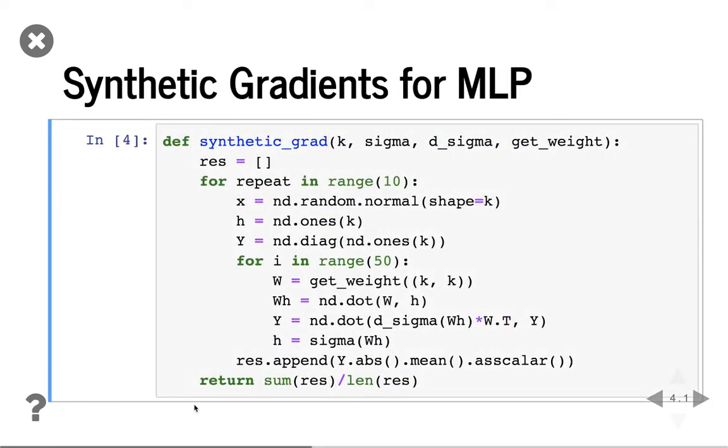Then we define a function to compute the synthetic gradients of MLP. So the input is k. Again, this is the shape. And sigma is activation function. D_sigma is sigma prime. This is a gradient function of the activation function. Then get_weight, which means how to initialize, how to get the initialized weight matrix. This is a function handle.